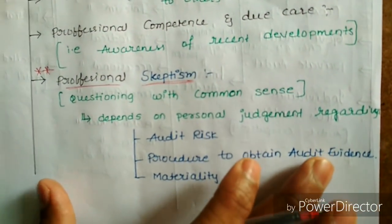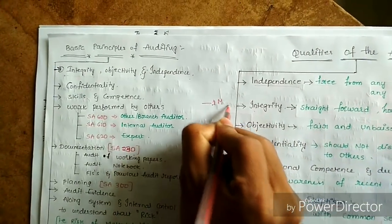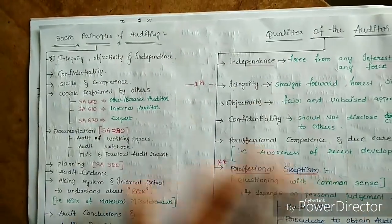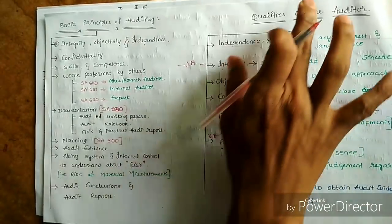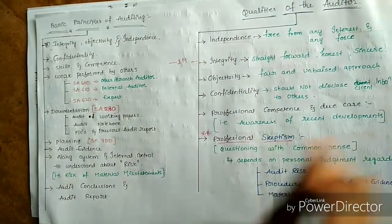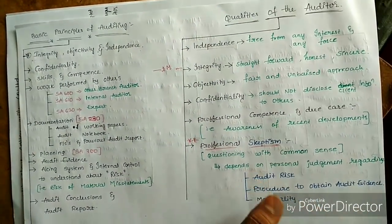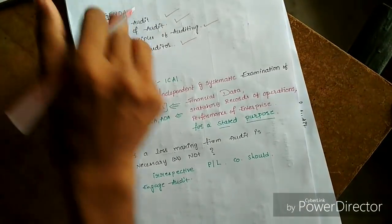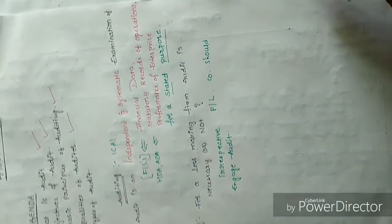We can expect at least one mark from both of these topics — basic principles of auditing and qualities of an auditor — in the examination. Next topic is types of audit.